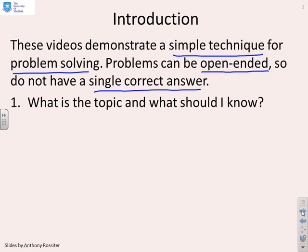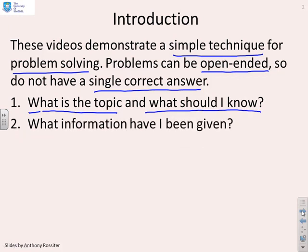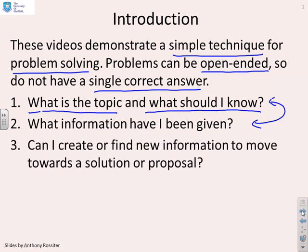We've suggested you take a simple technique such as first ask what is the topic and write down what you should know about the topic. Secondly, look at the information you've been given and see how this information links to what you know already. You may find a combination of one and two gives you new information, so you come up with some form of iteration and gradually it will be self-evident how you move towards either a solution or a proposal.